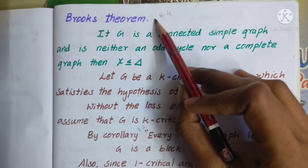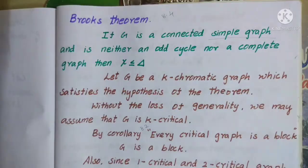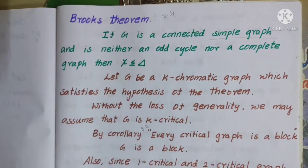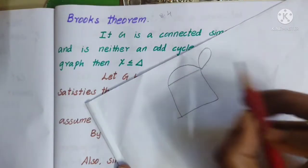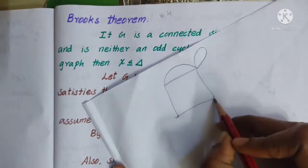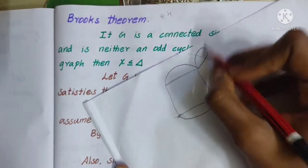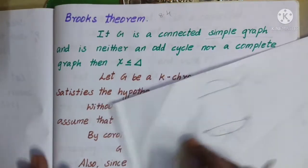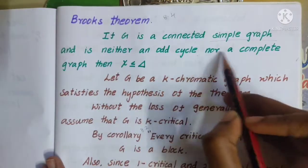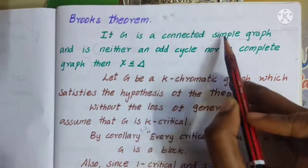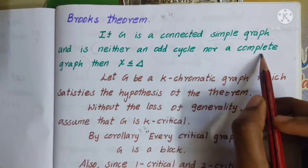Let's see graph theory and Brook's theorem. If G is a connected simple graph — a simple graph has no loops and no parallel edges. Parallel edges means those vertices share multiple edges between them. Neither an odd cycle nor a complete graph — this means we have a connected simple graph where an odd cycle is also a complete graph.